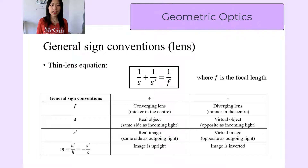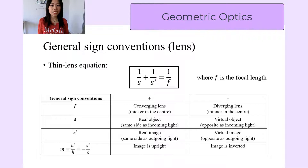The object distance, s, is positive when it is on the same side as the incoming light, and we call that a real object. We can also have a virtual object when we have a combination of lenses and mirrors — in that case, the object is on the opposite side as the incoming light.